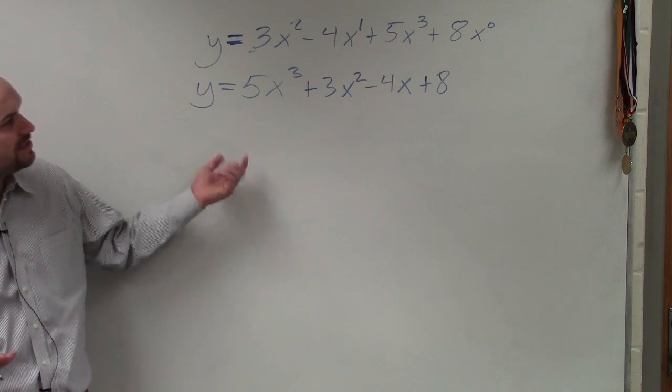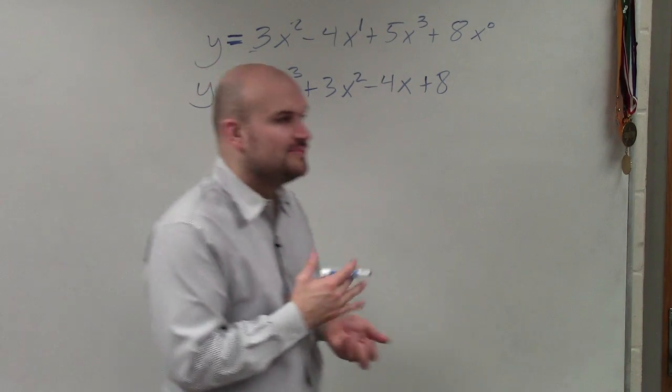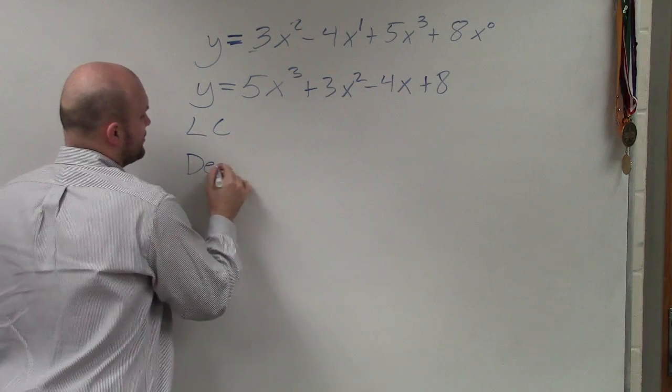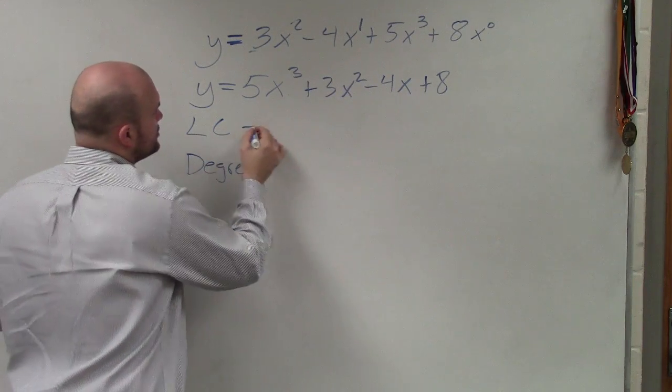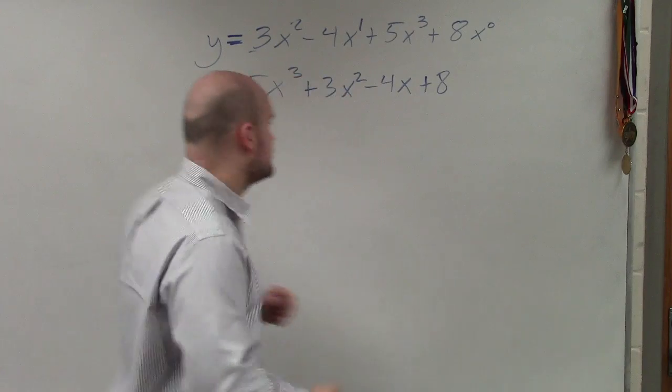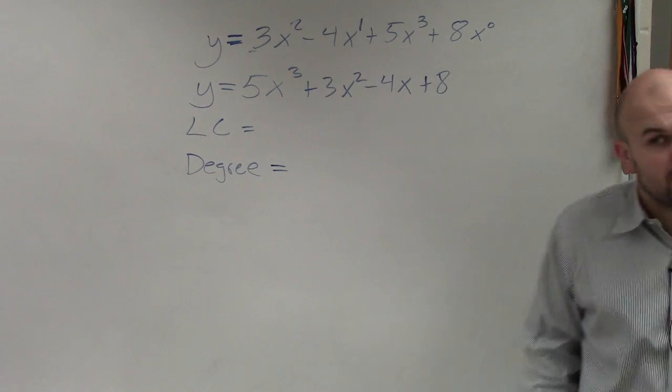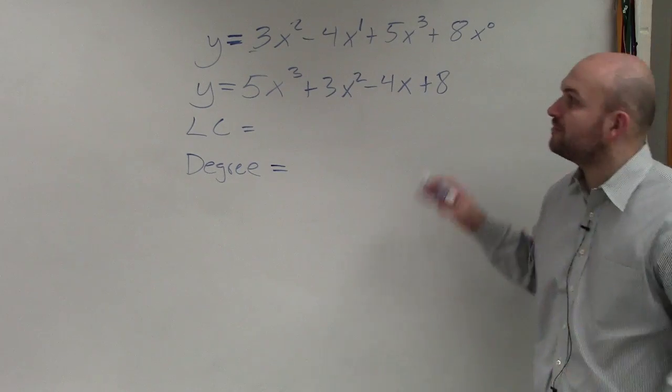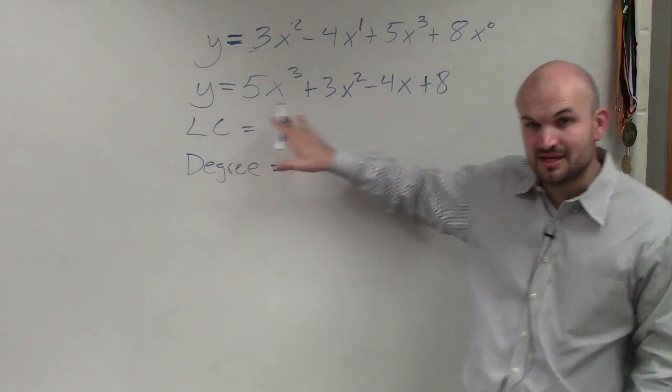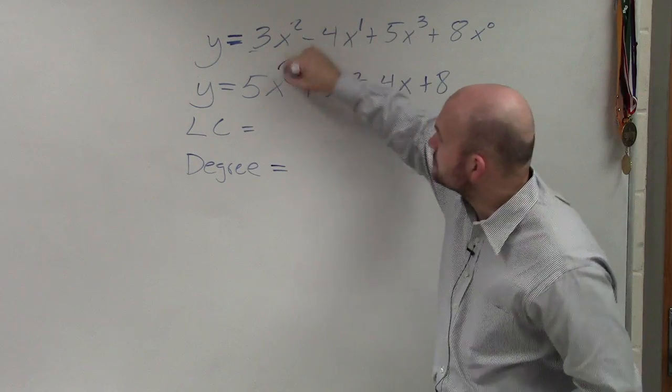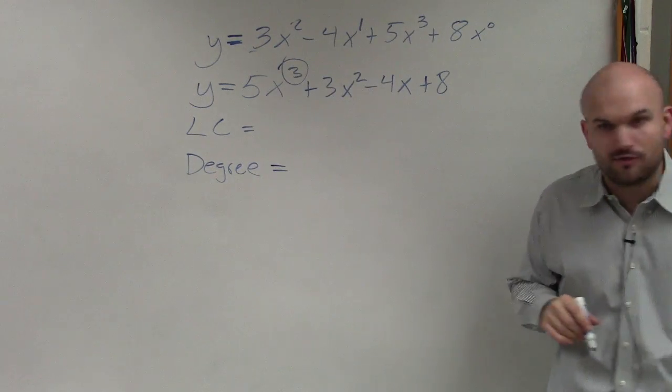Now the next thing we're going to do is identify the leading coefficient and our degree. When looking at the degree, the degree is going to be the largest power of your polynomial. It's very important for us to make sure that we rewrite this in descending order first. So the degree is going to be your largest power, which in this case is 3.